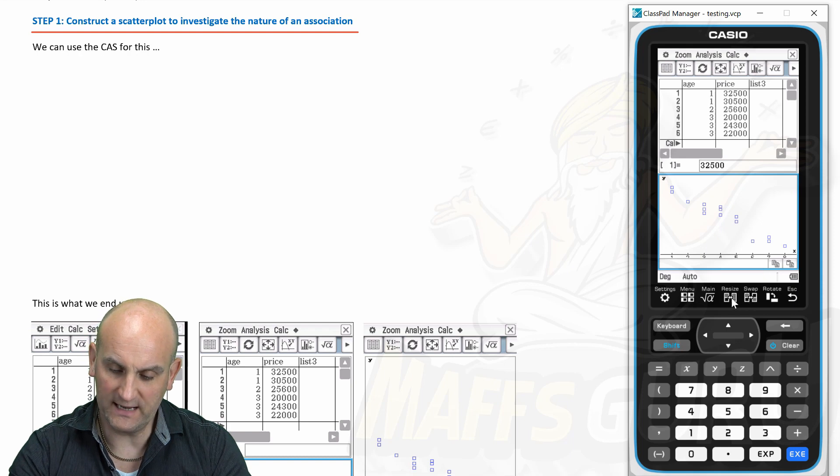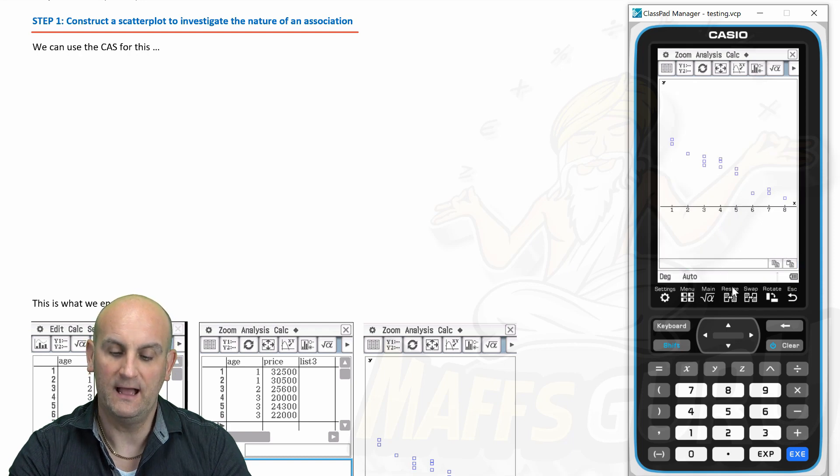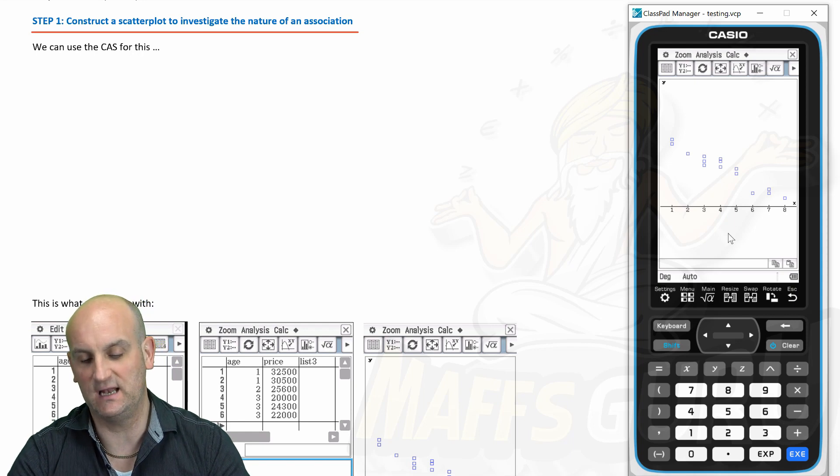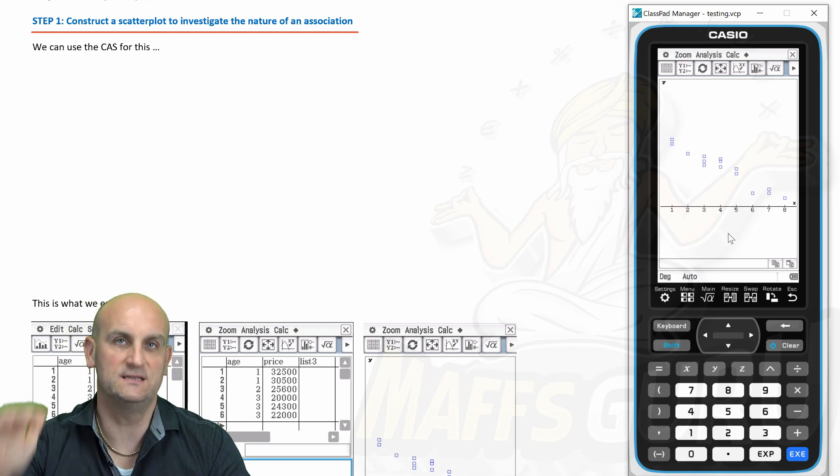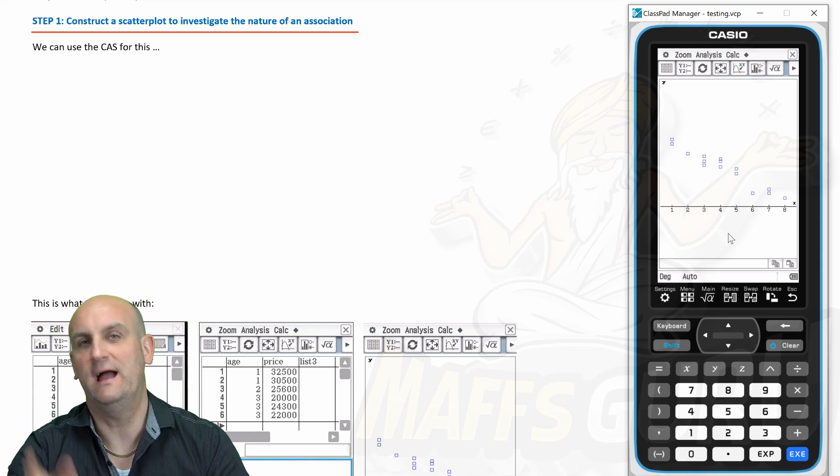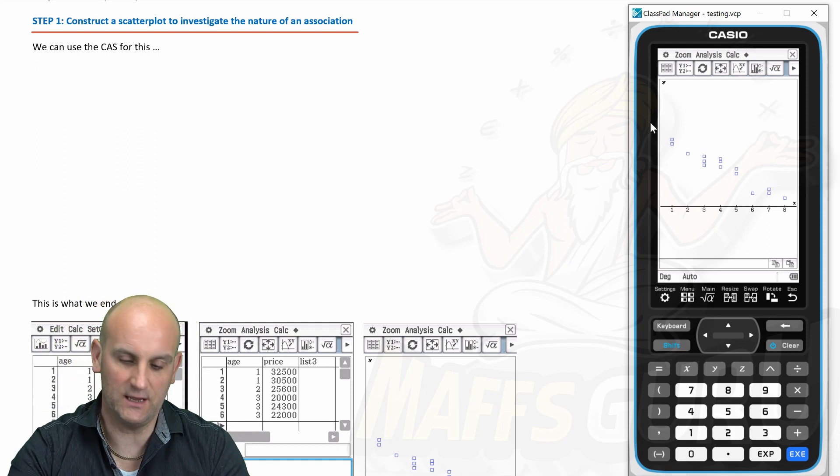Now I know on these CAS calculators particularly this Casio class pad while I can seem to get the values along the bottom I cannot get the values up the side to show on this calculator at all. If you know how to leave a comment below and I will give you a credit in a later video.